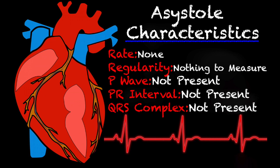Let's talk about a few characteristics of asystole. Your rate is going to be none, meaning that your patient is pulseless. The regularity is hard to say because there's nothing actually there to measure. Your P waves are not present, your PR interval is not present, and your QRS complexes are not present. The P wave represents atrial depolarization and the QRS complex represents the depolarization of the ventricles. So neither one of these are contracting, there's no electrical activity going on, and that is why you see a flatline on an EKG.